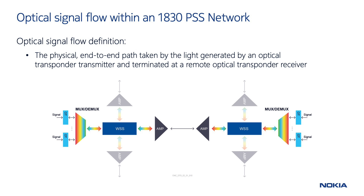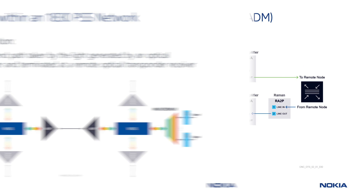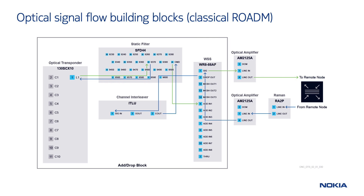The reverse direction is similar and typically follows the same path. In this diagram of a classical Rotem node, both the upstream and the downstream flows are represented. That is, we can see both the direction of the signal originated by the transponder towards the line span (upstream), and the opposite, where the signal enters into the local node from the remote node and terminates over the local transponder (downstream).